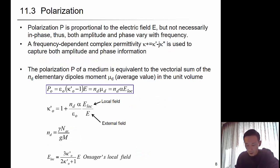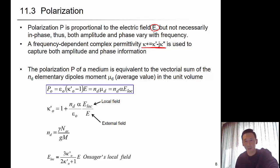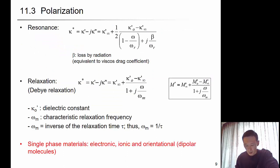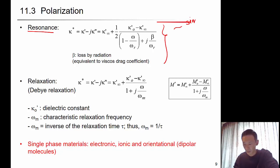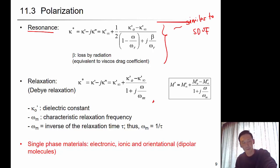Polarization is proportional to the electric field E, but not necessarily in phase — it shows amplitude and phase variation with frequency. It is expressed with a complex permittivity, kappa-asterisk. Polarization P is equivalent to the vectorial sum of N_d times the elementary dipole moment U_d per unit volume. For resonance behavior, the equation is similar to a single degree of freedom system. For relaxation behavior, it is similar to what we've seen for P-wave and S-wave elastic wave propagation.